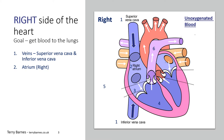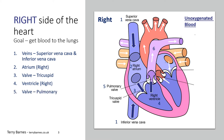Both the inferior and superior vena cava terminate into the top chamber of the heart called the right atrium. Once the right atrium has received this unoxygenated blood, it is forced through a valve called the tricuspid valve. The tricuspid valve is made up of three triangular flaps of skin called cusps — this is where the valve gets its name. Once the blood passes through, it travels into the second chamber, the right ventricle, and is then forced through the pulmonary valve into the pulmonary artery, taking the blood into the pulmonary system — your right and left lungs.